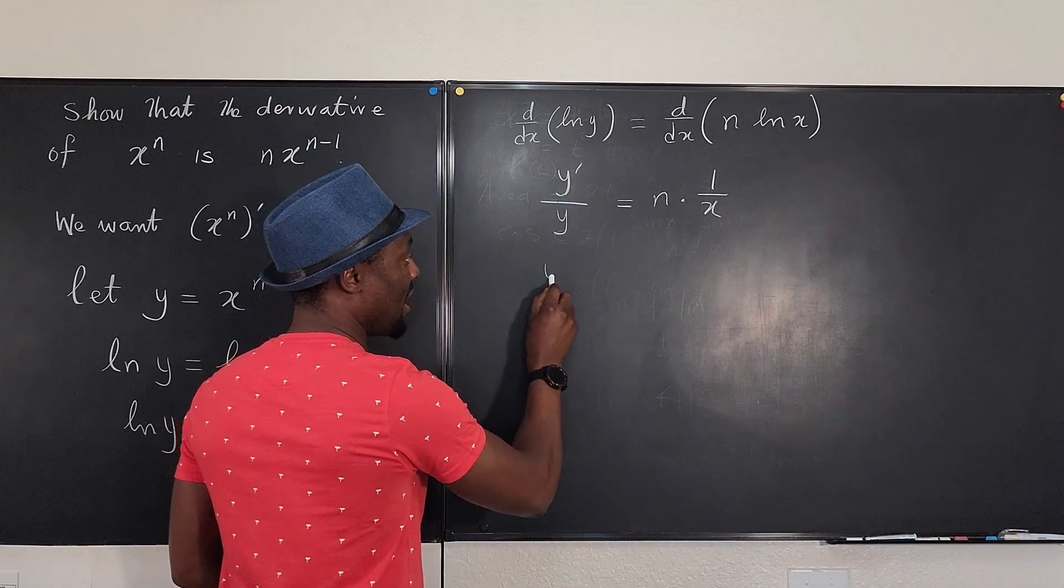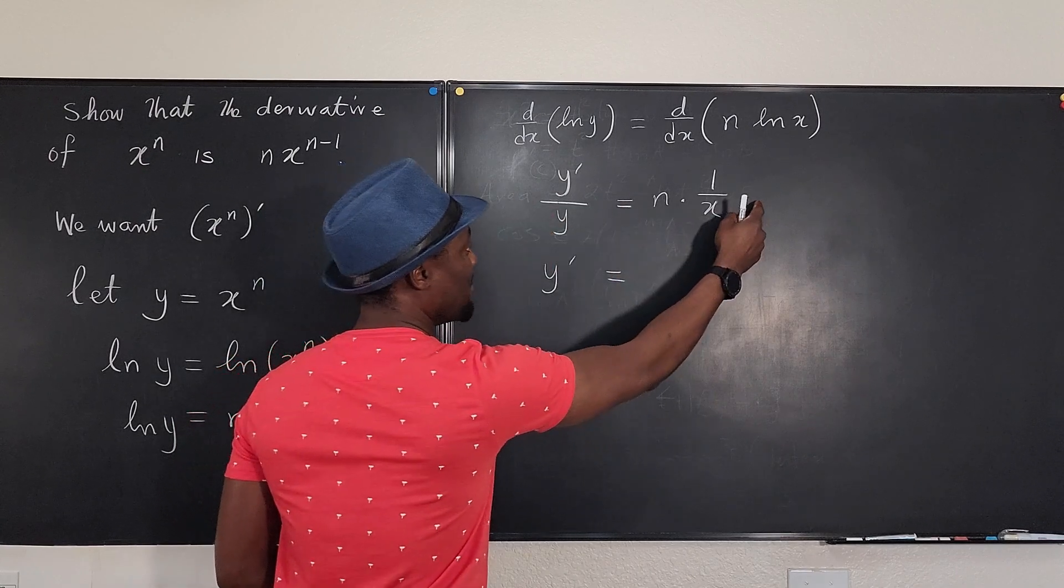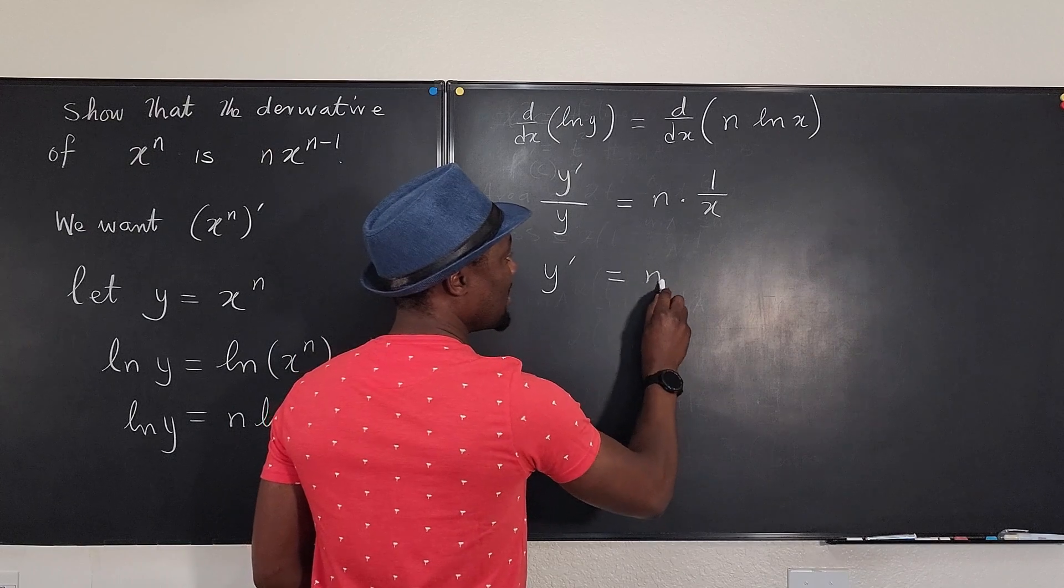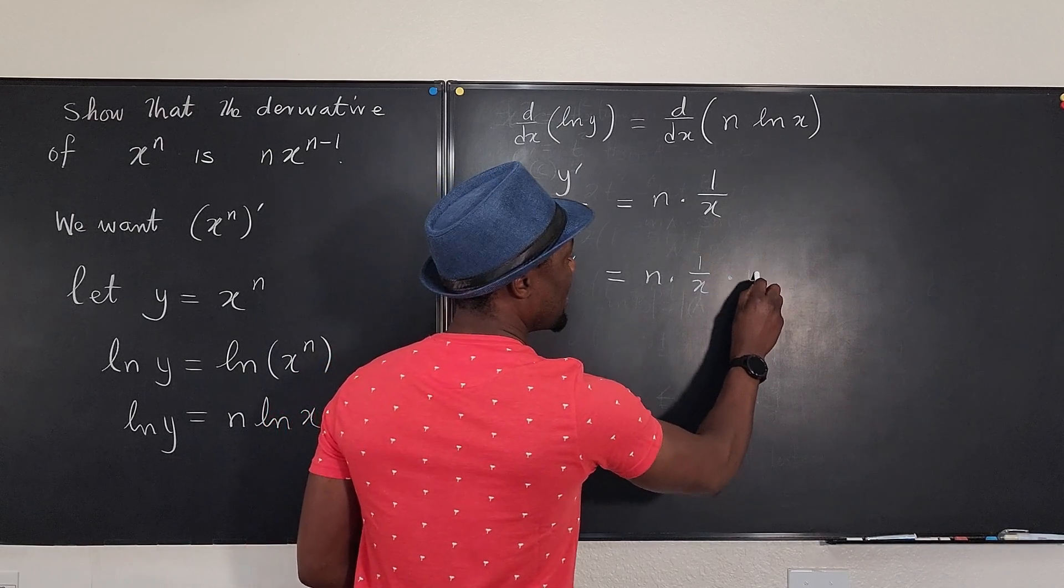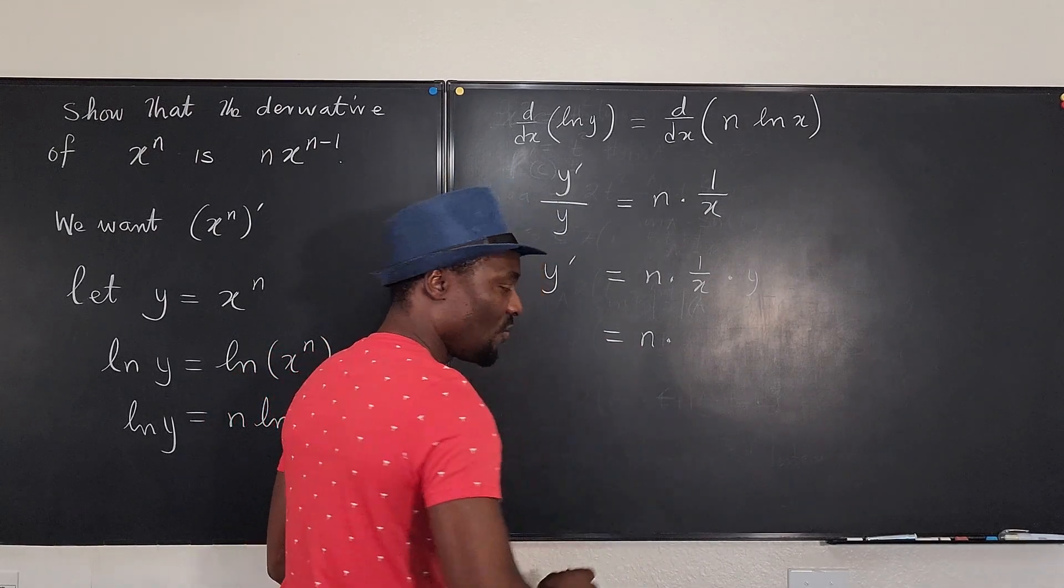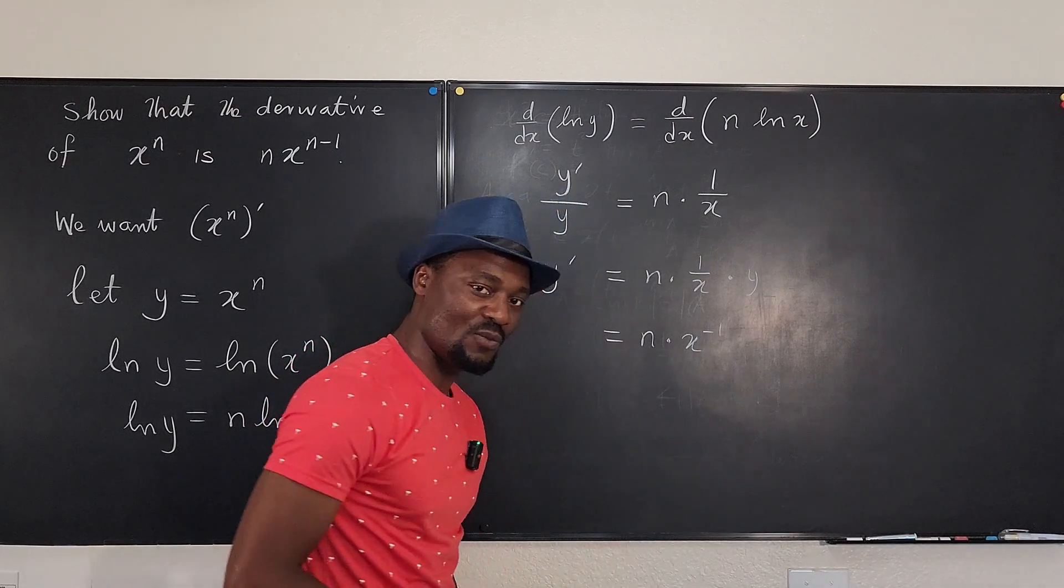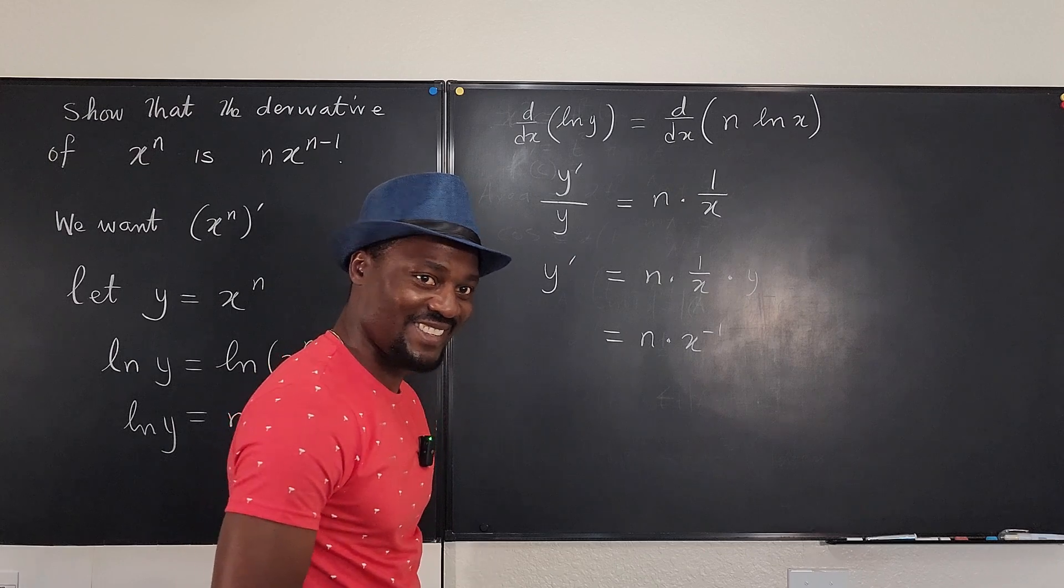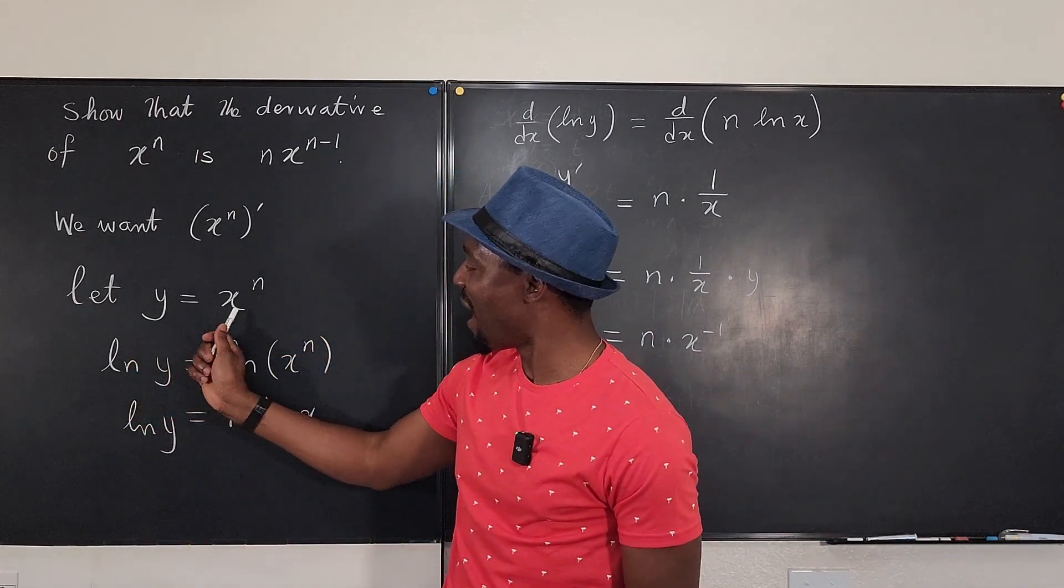Nice. So what is y'? Well, y', if I multiply both sides by y, is going to be n times 1/x times y. Watch this: this is the same thing as n—what did we say 1/x is? It's x^(-1). That's how you write it when you're dealing with laws of exponents, right? And what is y? From the beginning, we said let y be x^n.